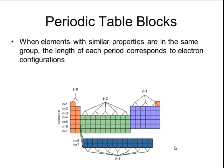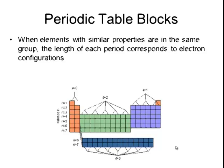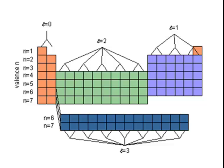So for example, in period 1, the 1s sublevel is being filled. A 1s orbital can only hold 2 electrons, so period 1 is only 2 elements across.